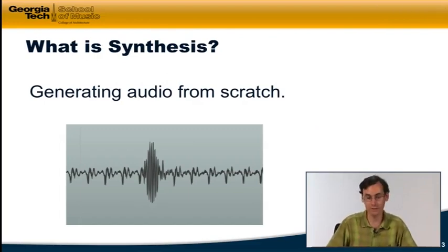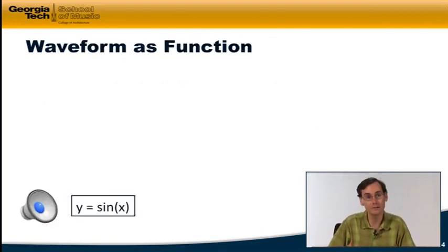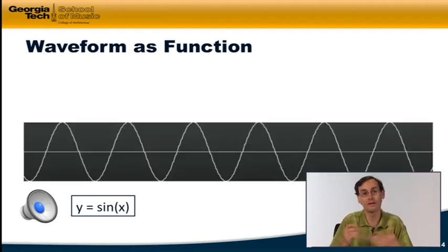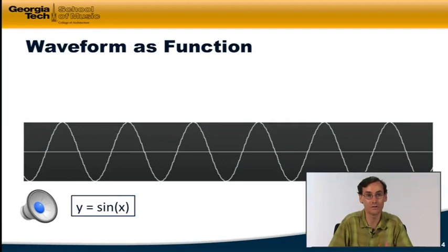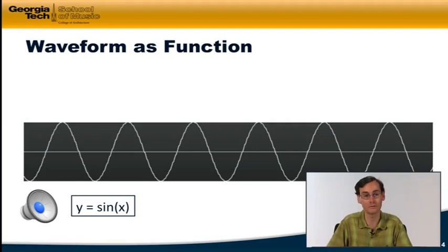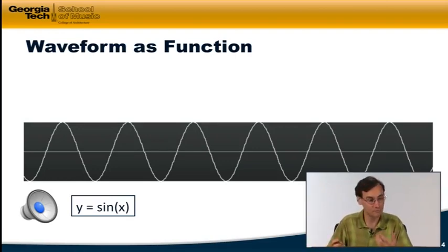So how would we actually do that? It actually goes back to what we were talking about in the very first lecture in the course — this notion of a waveform as a function, like y equals sine x or something like that. You can imagine that we can synthesize a sine wave, since no perfect sine wave is ever going to exist that we can capture on a microphone. We'd have to synthesize this from scratch. We can simply use this function sine x to figure out what the amplitude value should be at every sample over time. This is a fairly straightforward example of synthesis — of making a sine wave.